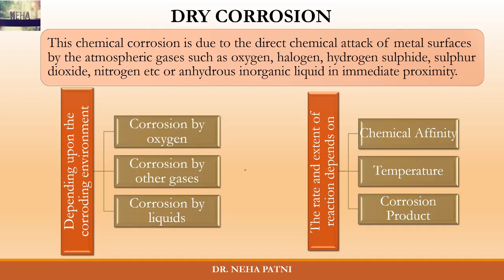Hi, I'm Neha and today I'm going to discuss dry corrosion. The name says it is basically dry, so this type of corrosion occurs in an atmosphere which is dry — that means there has to be an absence of moisture. This corrosion is also known as chemical corrosion because there is a direct chemical attack on the metal surface; the gases attack and the gases must be free from moisture. Some examples are oxygen, halogen, H₂S, sulfur dioxide, nitrogen, etc.